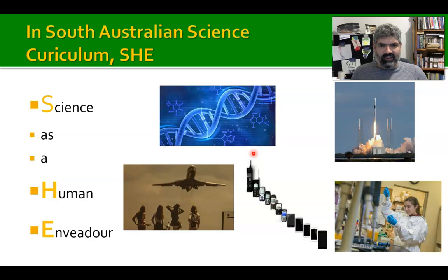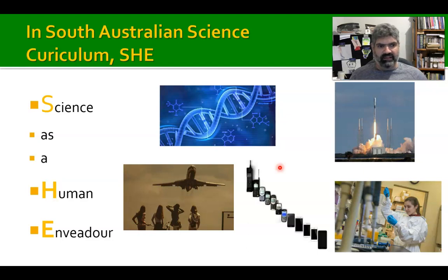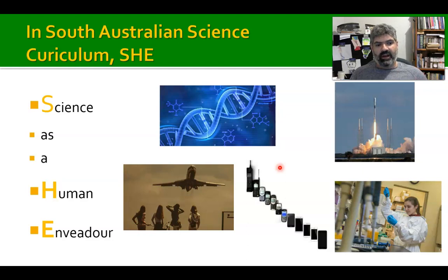It sounds fancy and complicated, but all it's looking at is the interactions between science and society. Science has driven society to get better technology, better phones, better vehicles, jumbo jets, cures for diseases, and vaccines. So science has certainly influenced our society and our lives, but also our society and lives will influence and drive the science.